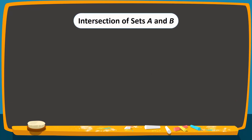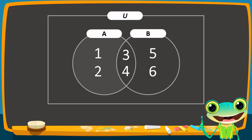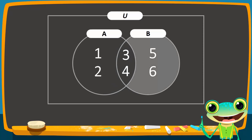How do we represent A intersection B on this Venn diagram? A intersection B is the set that contains elements that are common to both A and B. The region containing elements 1 and 2 is in set A only, and the region containing elements 5 and 6 is in set B only. Therefore, we do not shade these two regions. The overlapping region contains elements common to both sets, which are 3 and 4. Therefore, this is the region we shade. When two sets are overlapping, their intersection is represented by shading the overlapping region.